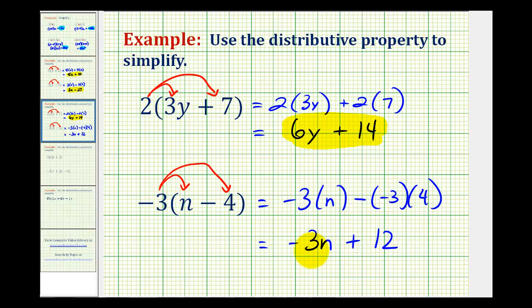So we should be a little extra careful when distributing a negative and we have subtraction. Another way to remember this is plus twelve, we can think of this as negative three times negative four, which would be a positive twelve.